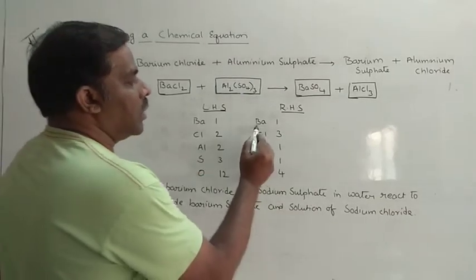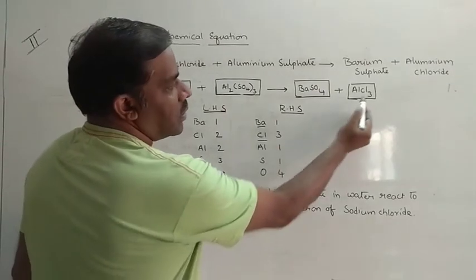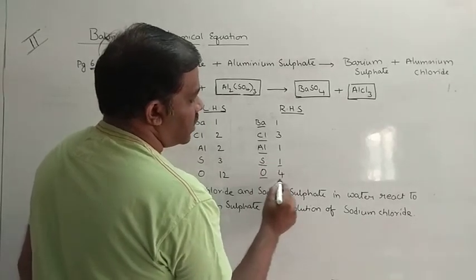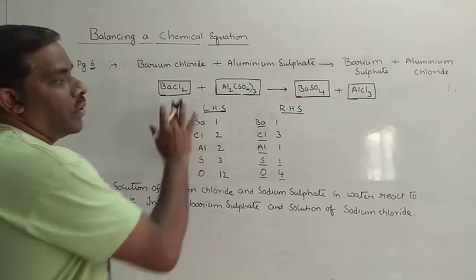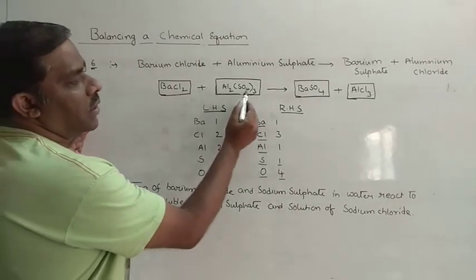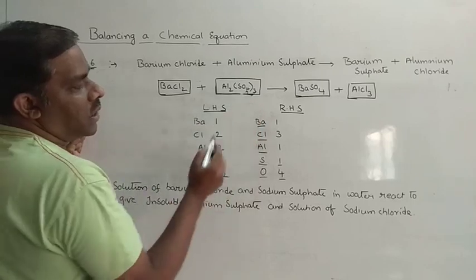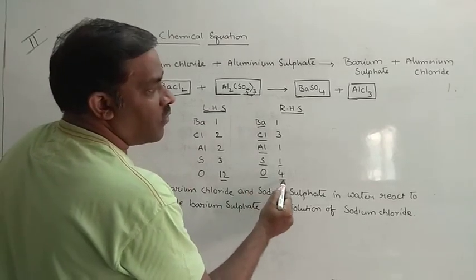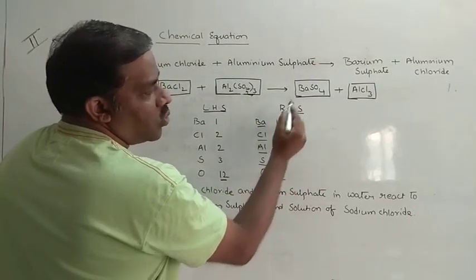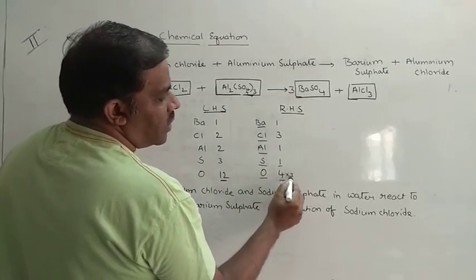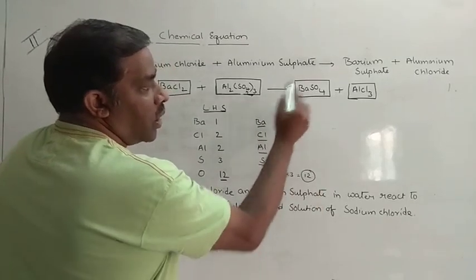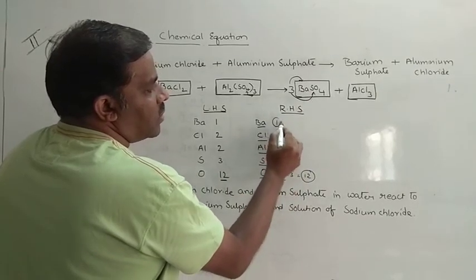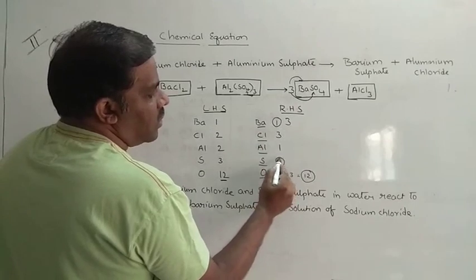When we have such an equation, we need to start with the element having the maximum number of atoms, which is oxygen. On the left-hand side there are 12 oxygens, on the right-hand side only 4. So we multiply BaSO4 by 3, giving us 12 oxygens. This also means there are now 3 bariums and 3 sulphurs on the right, so sulphurs are balanced. The number of bariums must also change to 3, so we put a 3 in front of BaCl2. But now the number of chlorines changes — 3 times 2 equals 6 on the left.